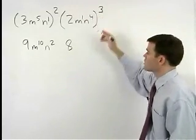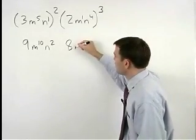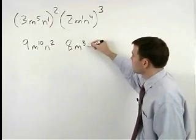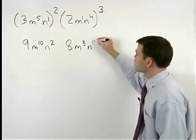Think of m as m to the first and multiply each of the exponents times 3. So 1 times 3 is 3 and we have m to the third and 4 times 3 is 12 so we have n to the twelfth.